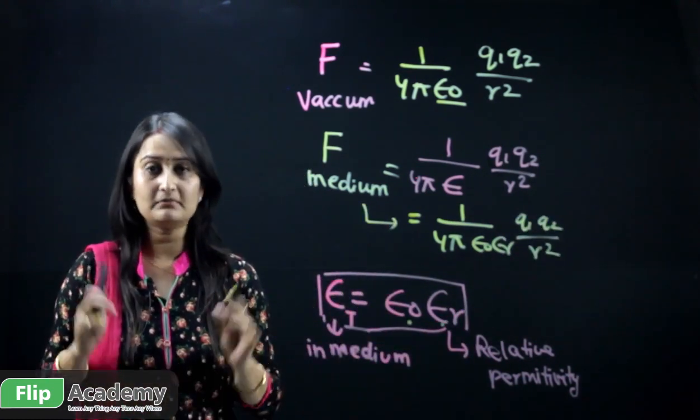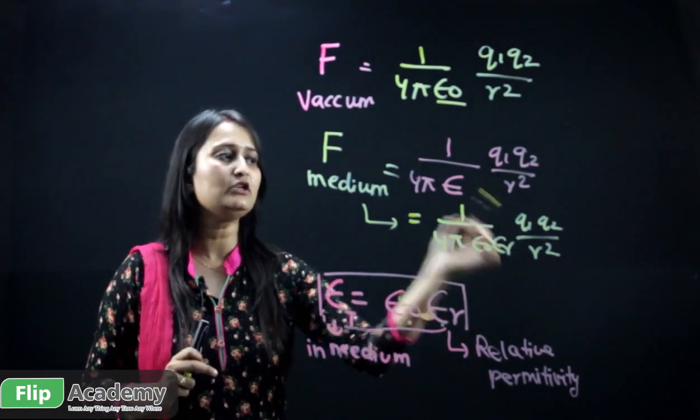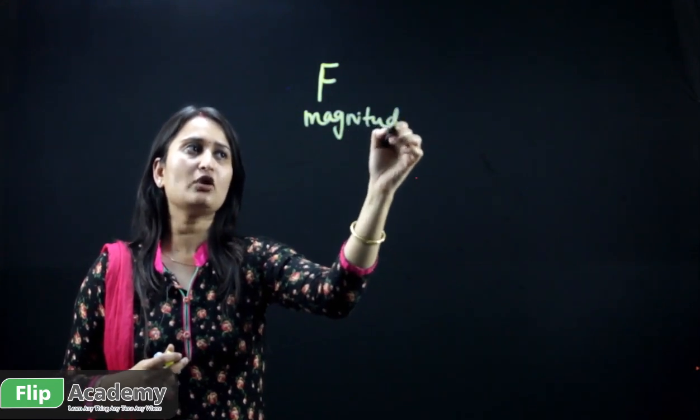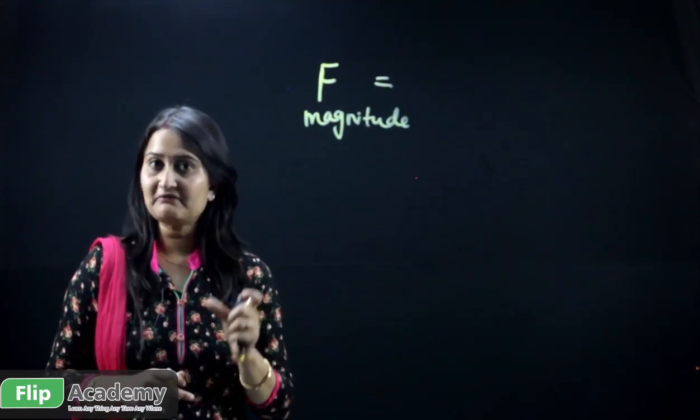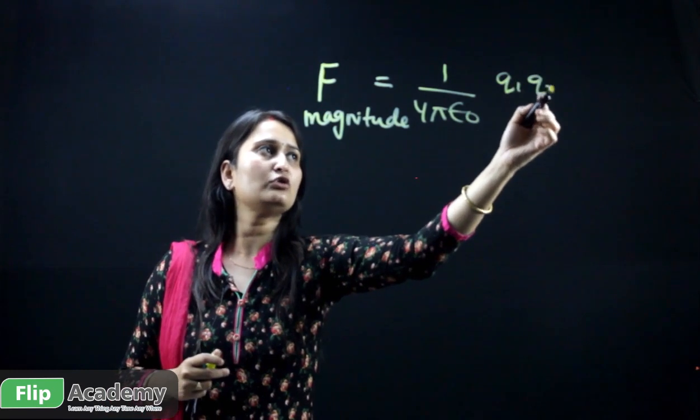The force for any medium becomes: F = (1 / 4π ε₀ εᵣ) × (Q1 Q2 / R²). This Coulomb force is basically a vector quantity. A vector quantity has both magnitude and direction. When we need to find only the magnitude — that is, the numerical value of the force — the formula becomes: |F| = (1 / 4πε₀) × |Q1 Q2| / R².